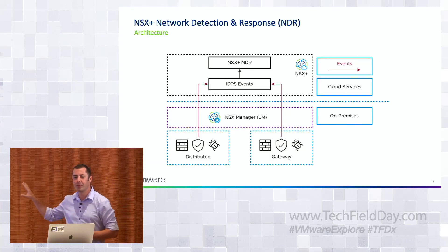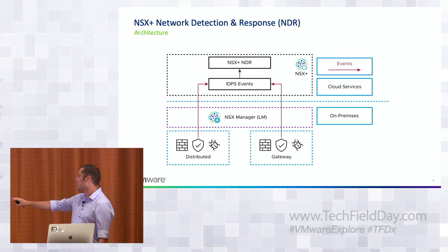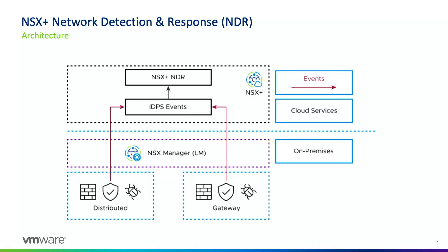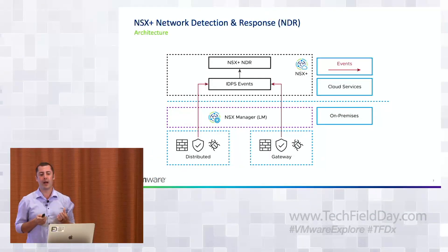Looking at the architecture: all enforcement happens on-prem. We have our distributed IDPS, which we've had for a couple of years. It follows the same concept as the distributed firewall — it frontends every workload with its own layer 2 to layer 7 firewall transparently, meaning you don't have to make any network changes to implement segmentation, whether isolating production from development, creating controlled communication to shared services, or implementing a full micro-segmentation policy within a multi-tier application.